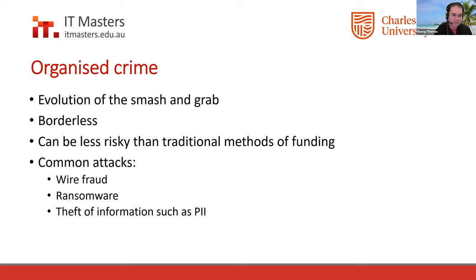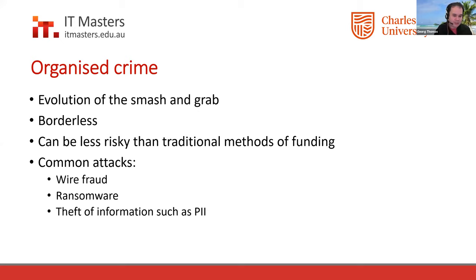Common attacks from organized crime include wire fraud — tricking people into transferring money to the wrong bank accounts — ransomware, and theft of personally identifiable information such as dates of birth, addresses, names, social security numbers, tax file numbers, and credit card numbers, which can be used for identity theft. Money laundering using cryptocurrency also lends itself well to organized crime.